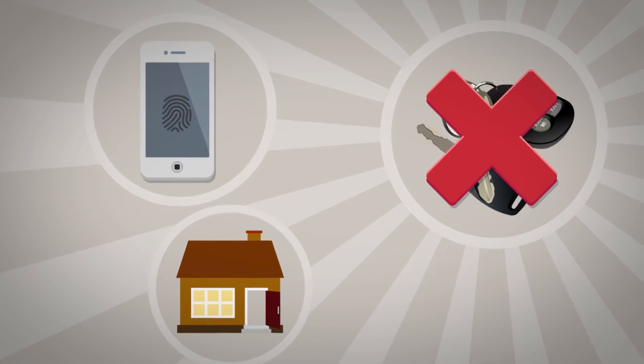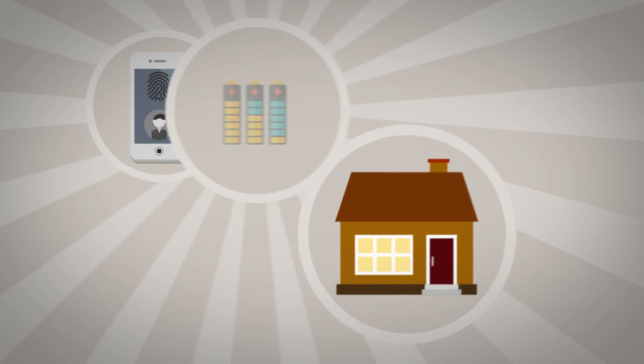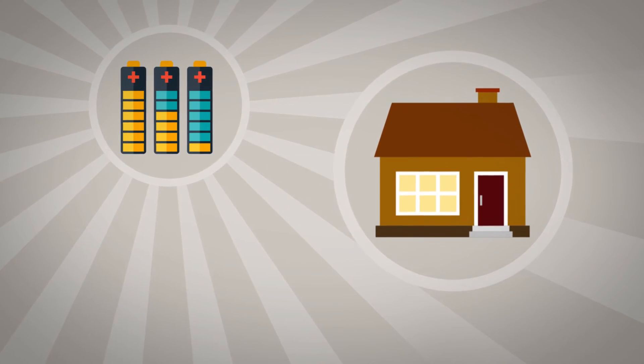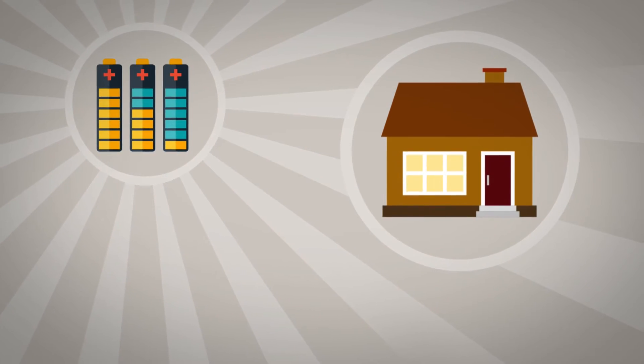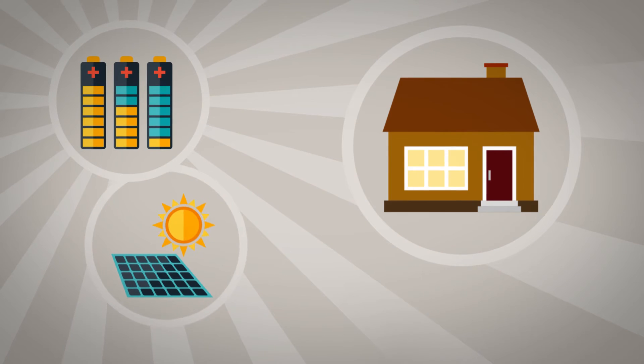Your home will have a battery, a big box like a water heater or AC unit. It will store electricity from your solar panels and help you avoid paying higher utility rates during peak hours. You can use it to charge up your car too.